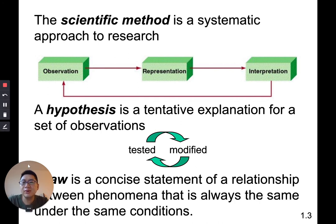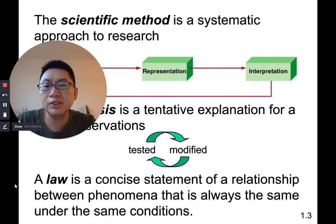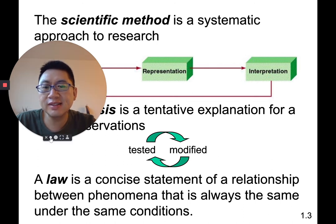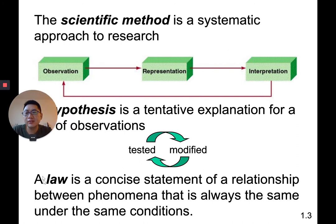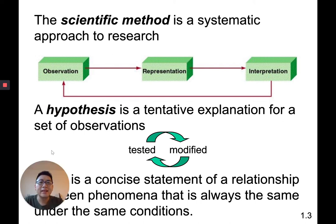Eventually we get to what's called a law. A law is a concise statement of a relationship between phenomena that's always the same under the same conditions. An example would be the law of gravity — when you drop something, it always falls and it's always the same under the same conditions. A law is something that always happens; there are no exceptions.